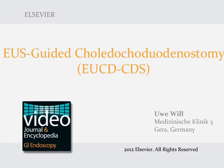Endoscopic ultrasound EUS-guided choledochoduodenostomy is considered an advanced technique of interventional endoscopy for internal drainage of bile in patients with malignant jaundice and where endoscopic retrograde cholangiopancreatography, ERCP, is impossible to perform.